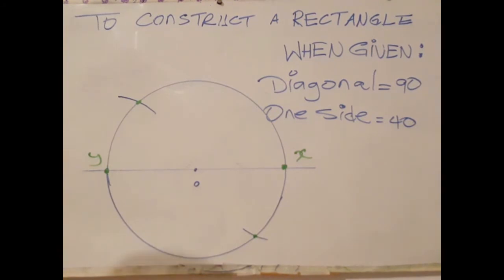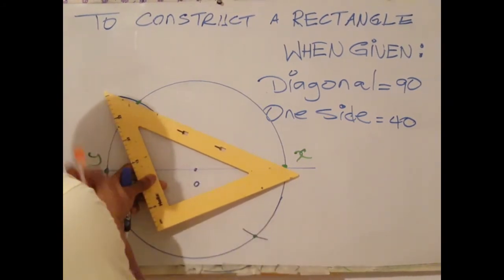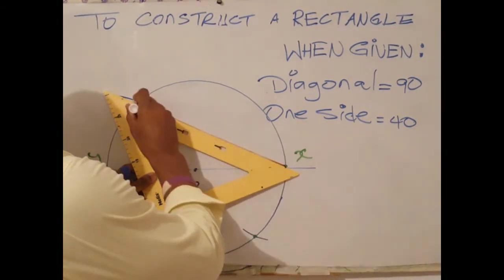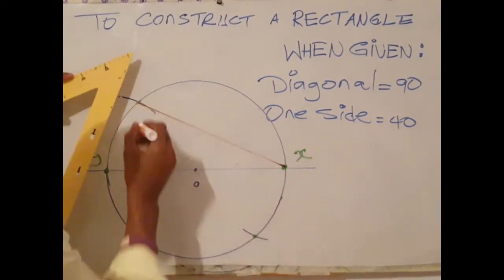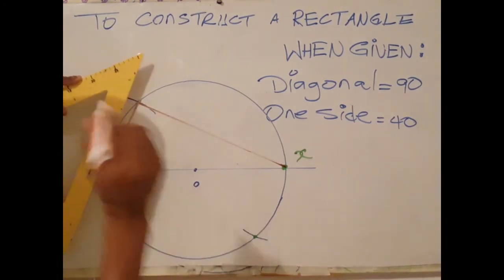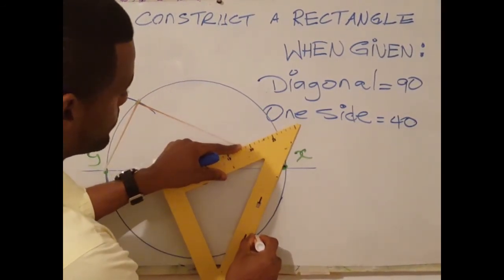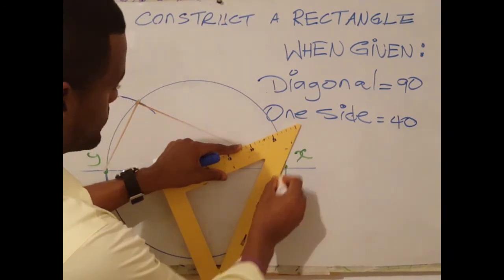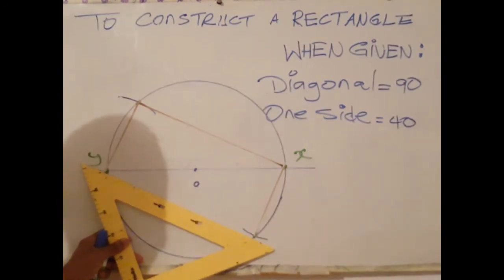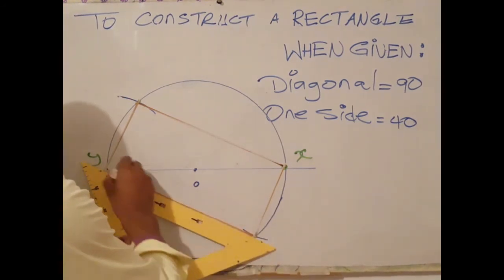And our final step is to join the upper point to X. So X to the upper intersection. Join that point to Y. Then X, the lower intersection point. And to complete our rectangle, join this point to Y.